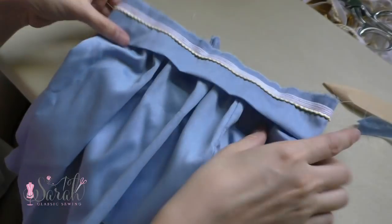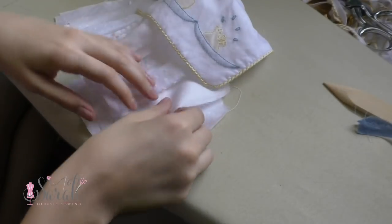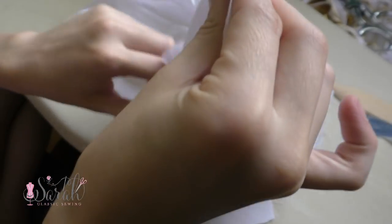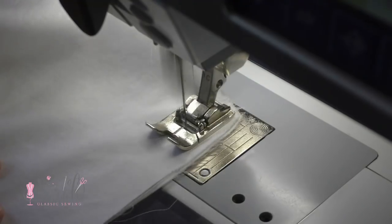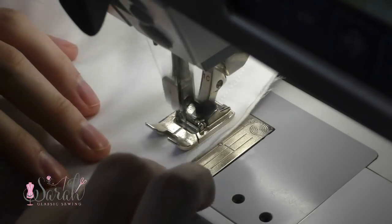I pinned that band to the bubble, adjusting the gatherers until they were evenly distributed and then I sewed the two together. When that was done, I set it aside and grabbed the shirt. I'm putting the shirt front and back together at the side seams.